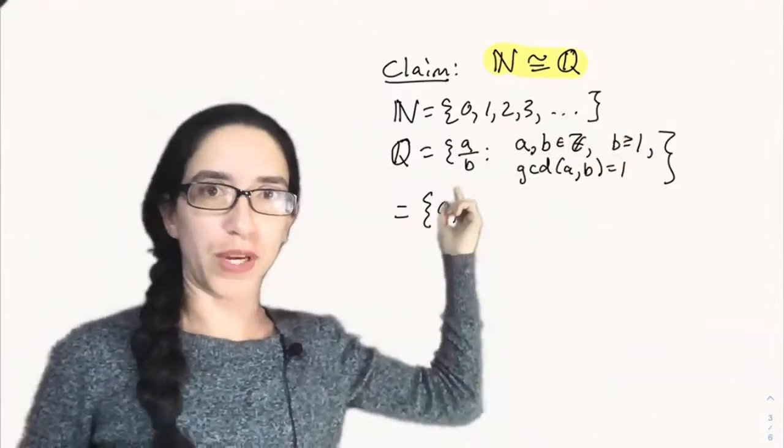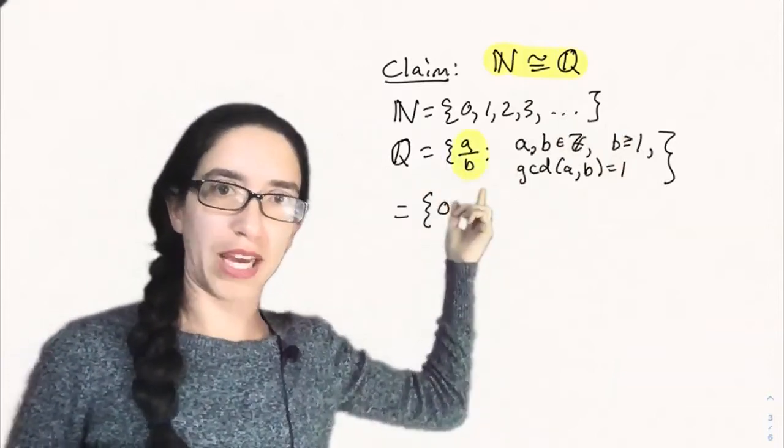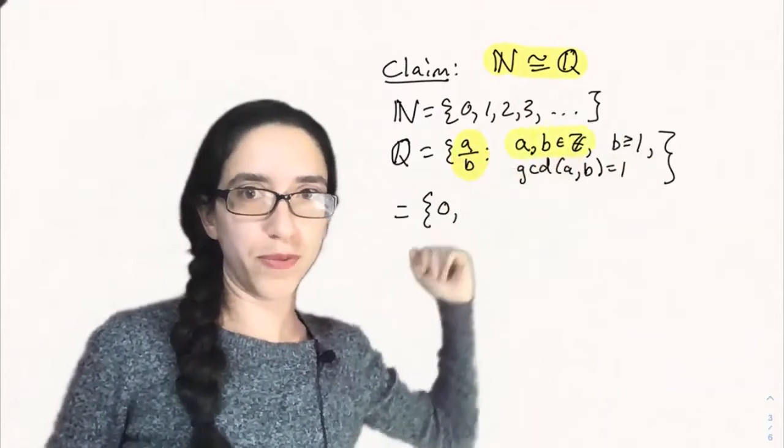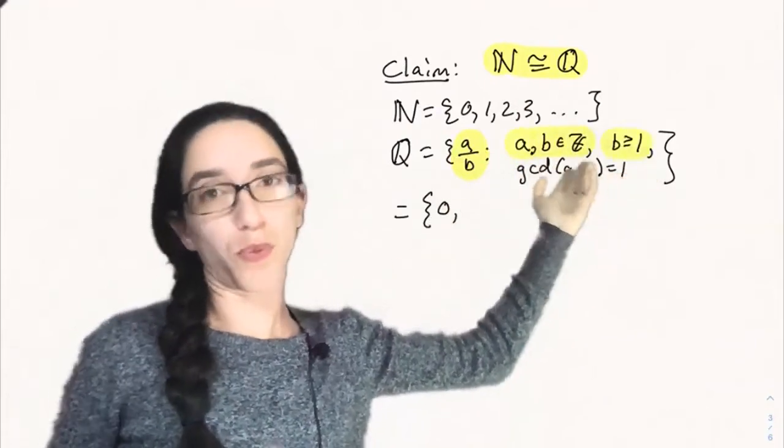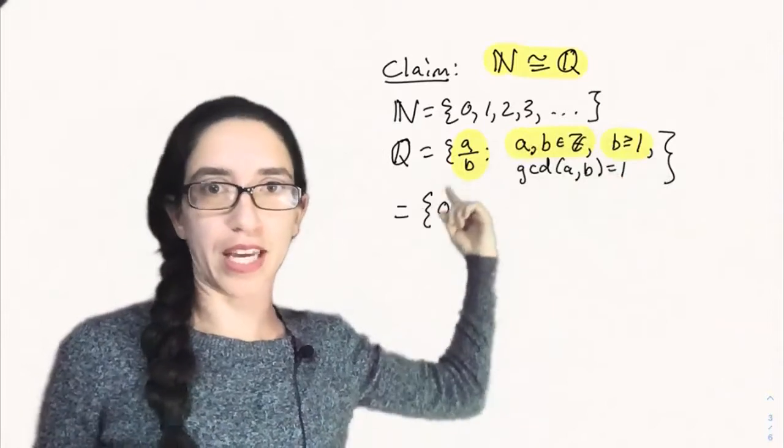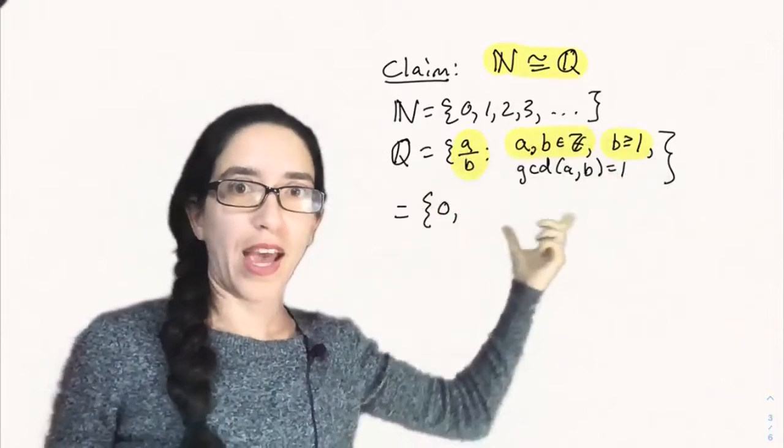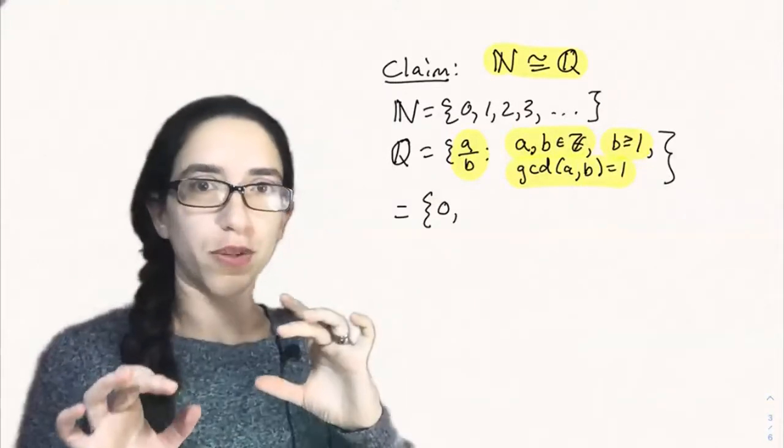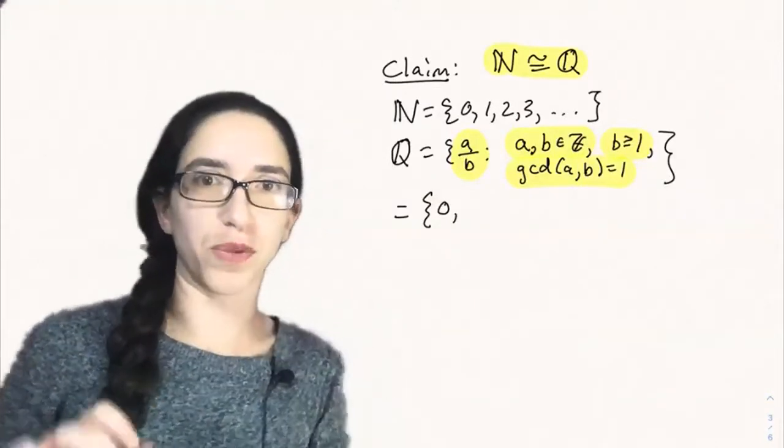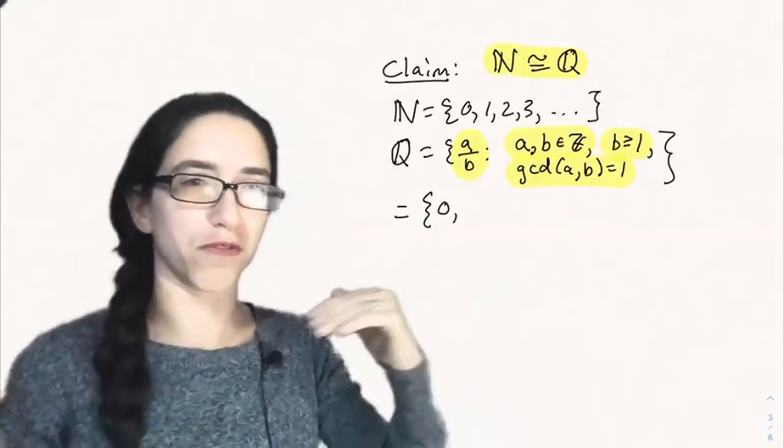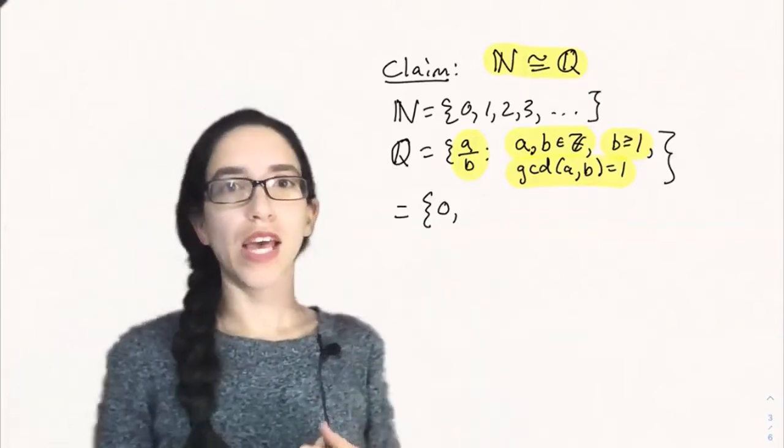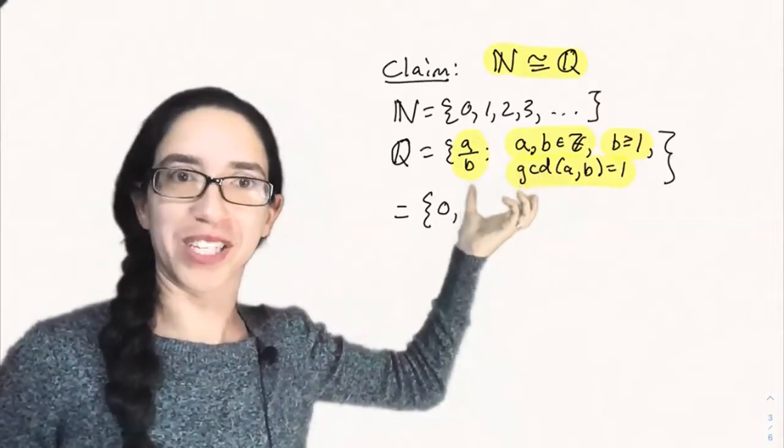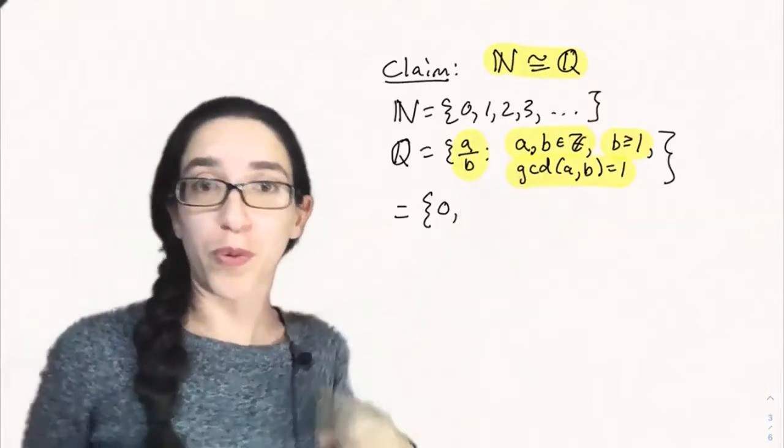And the rational numbers we can write as the set of all a over b fractions, so that a and b are both in the integers, and b is greater than or equal to 1 so that we're not dividing by 0 and the negative sign is always in the a. And also GCD of (a,b) equals 1. We say they're relatively prime just so that we have a reduced fraction. So we're not listing 2 over 4 as different from 1 over 2.